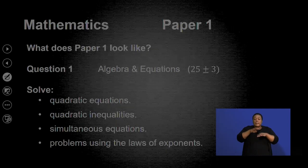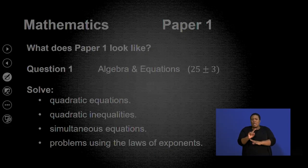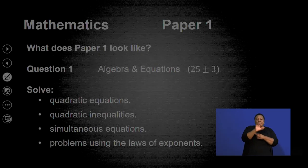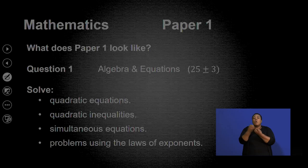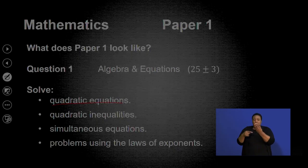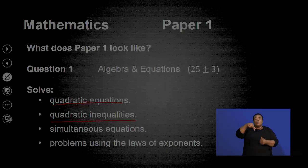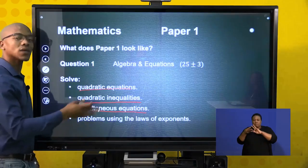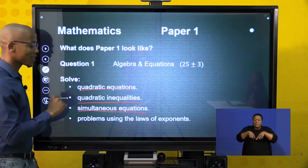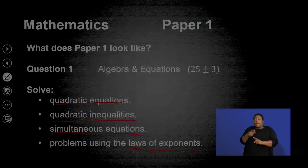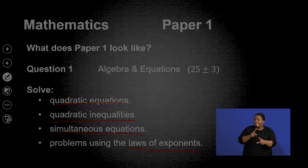Going into detail now: question 1 is algebra and equations, which ranges between 25 plus or minus 3 marks. Here you need to be solving quadratic equations, solving inequalities, and doing simultaneous equations. And then that last question you always run away from — but I believe you're no longer going to do that — involves laws of exponents.